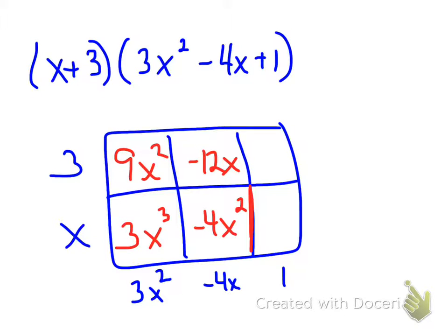Bottom right, I will have x times 1 for 1x. And above that, I will have 3 times 1 for 3.